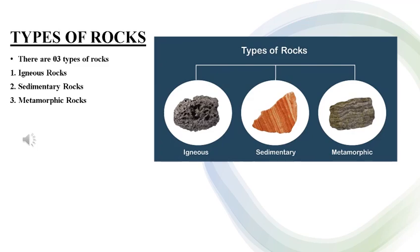Let's discuss the types of rocks. There are three types of rocks: the first one is igneous rock, the second one is sedimentary rocks, and the last one is metamorphic rocks. Please have a look at these pictures — they will show you the different types of rocks.